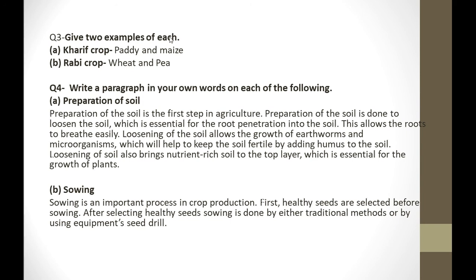Loosening the soil allows the roots to breathe easily. We mix the soil from top to bottom so that roots have proper air. Loosening of soil allows the growth of earthworms and microorganisms, which help keep the soil fertile by adding humus. Loosening also brings nutrient-rich soil to the top layer, which is essential for the growth of plants.